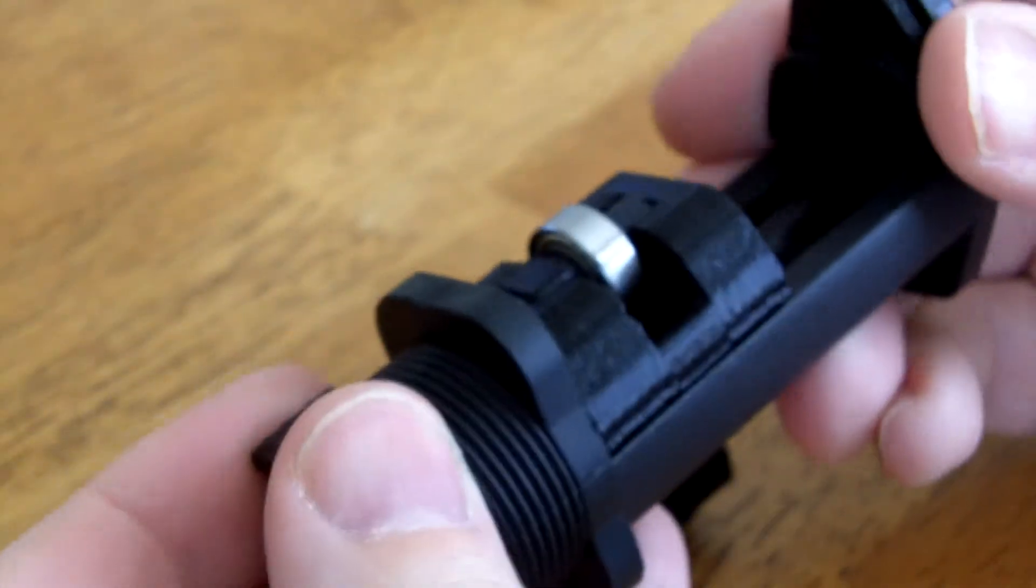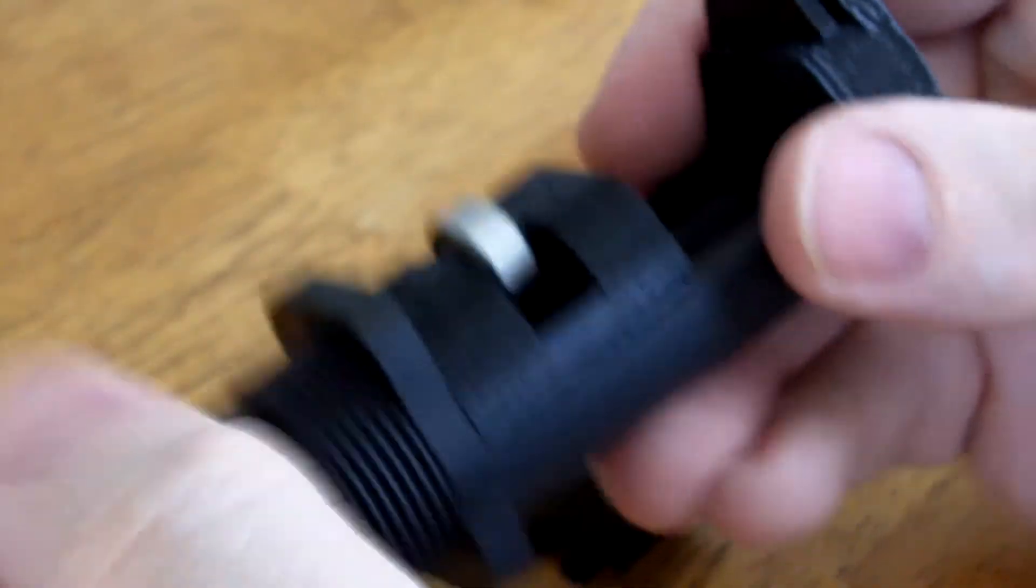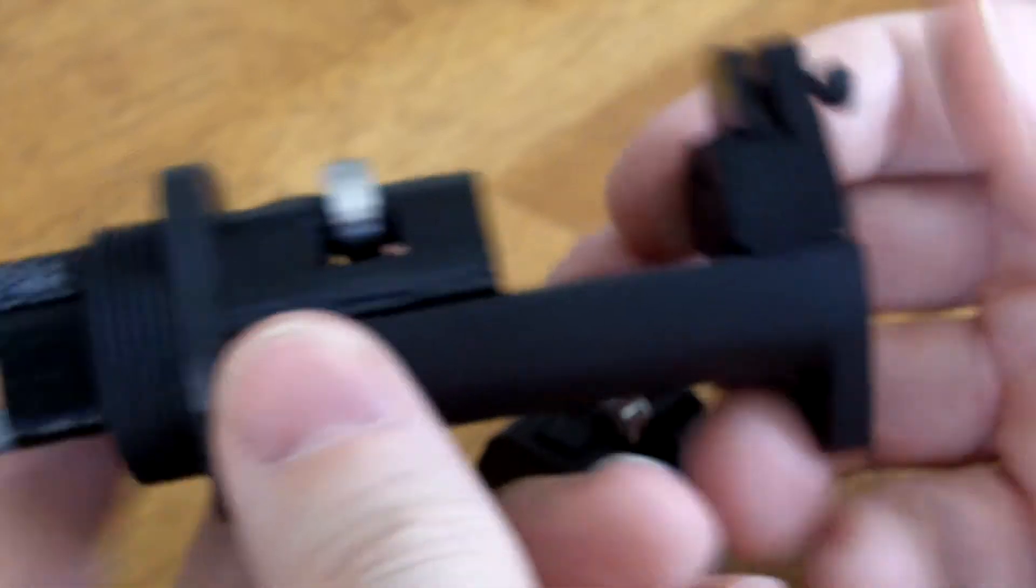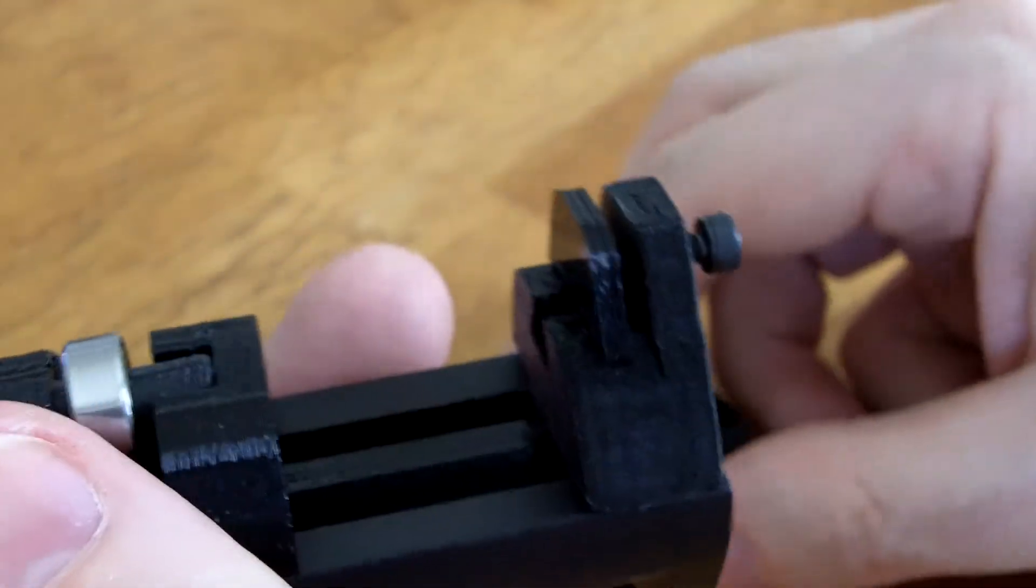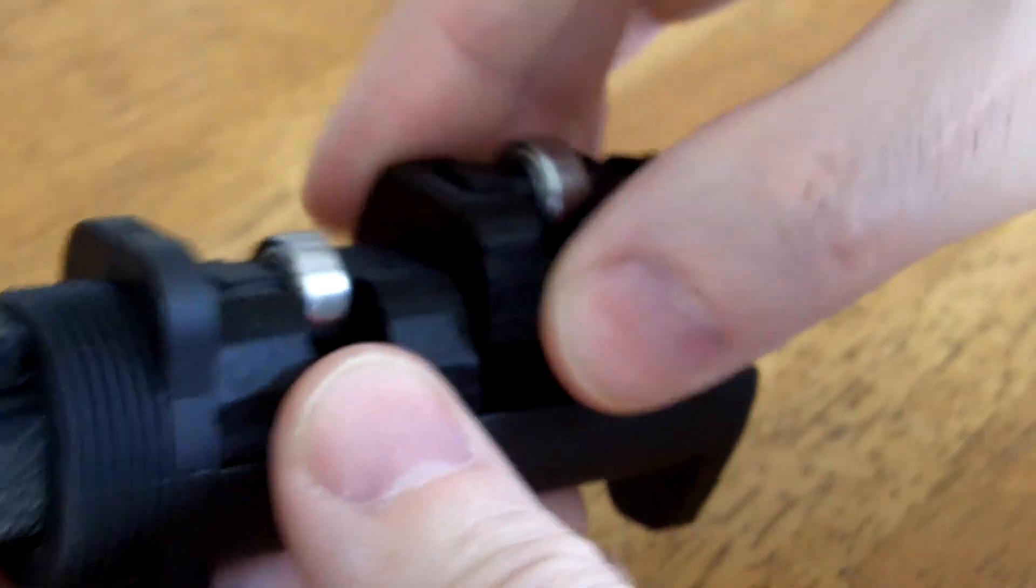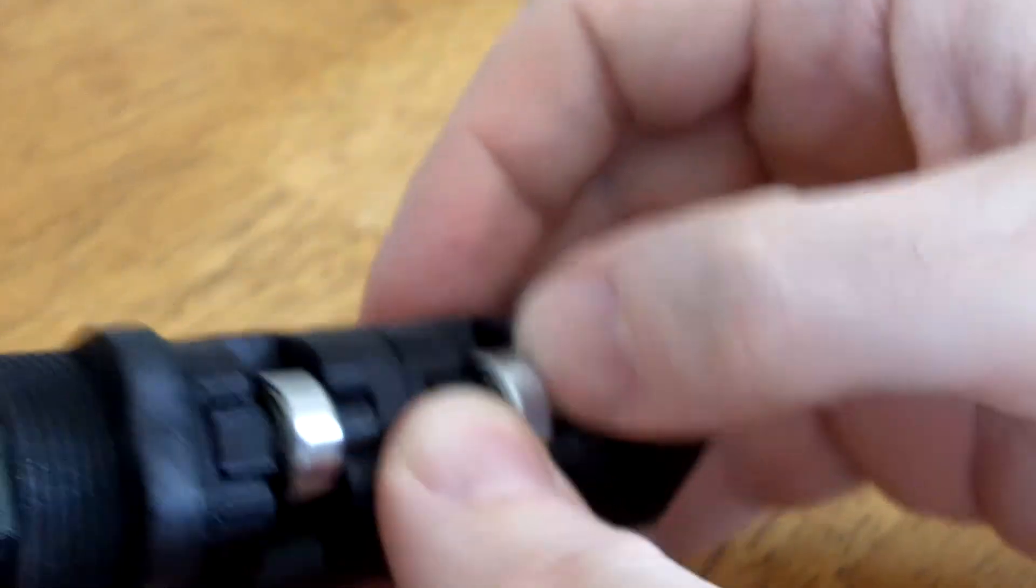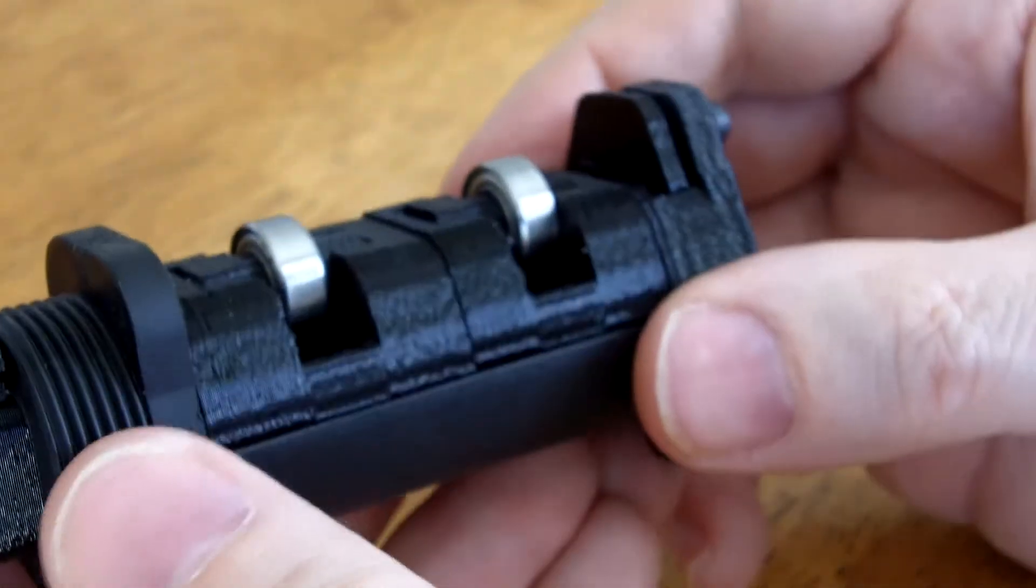So when it's all the way in like this, then that is for like ESUN filaments. Then all you do is just take part B and just stick it in and clip it in there like that.